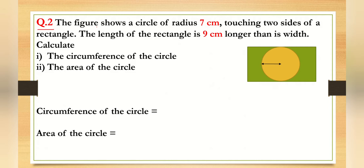Number one: the formula for the circumference of a circle is 2πr. The problem states the circle has a radius of seven centimeters. The radius is the distance from the center — this center line distance is seven centimeters.